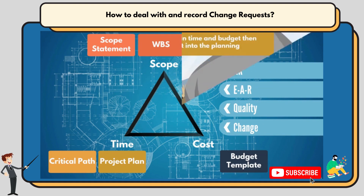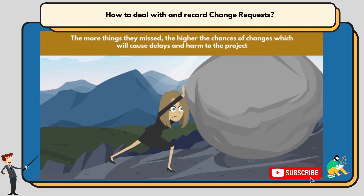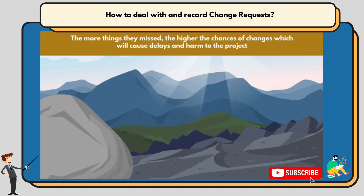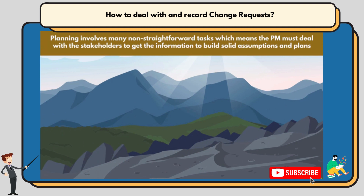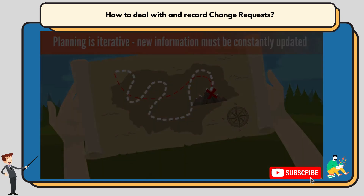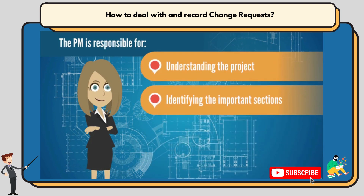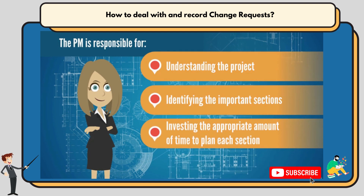What did we learn about planning? We learned that if a project manager wants to complete the project successfully with time and budget, they must put sufficient time, attention, and effort into the planning. The more things they miss, the higher the chance of changes and backtracking, which will cause delays and harm to the project. Planning involves many non-straightforward tasks, which means the project manager must deal with various stakeholders to get the information to build solid assumptions and plans. Both of these fit into the fact that planning is iterative — new information about changes can come to light, meaning the project manager may have to go back and update plans. The project manager is responsible for understanding the project, identifying the important sections, and investing the appropriate amount of time to plan each section and consider all dependencies.